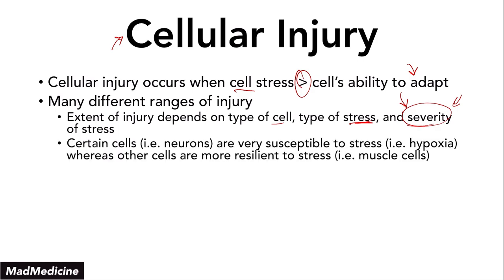Certain cells in our body like neurons are going to be more susceptible to stress, whereas other cells like muscle cells are going to be more resilient. The most essential cells in our body — neurons and myocardial myocytes — are so important that without neurons we can't function, and without cardiac myocytes our heart cannot pump blood. Those vital cells cannot handle stress well because they are heavily relied upon.